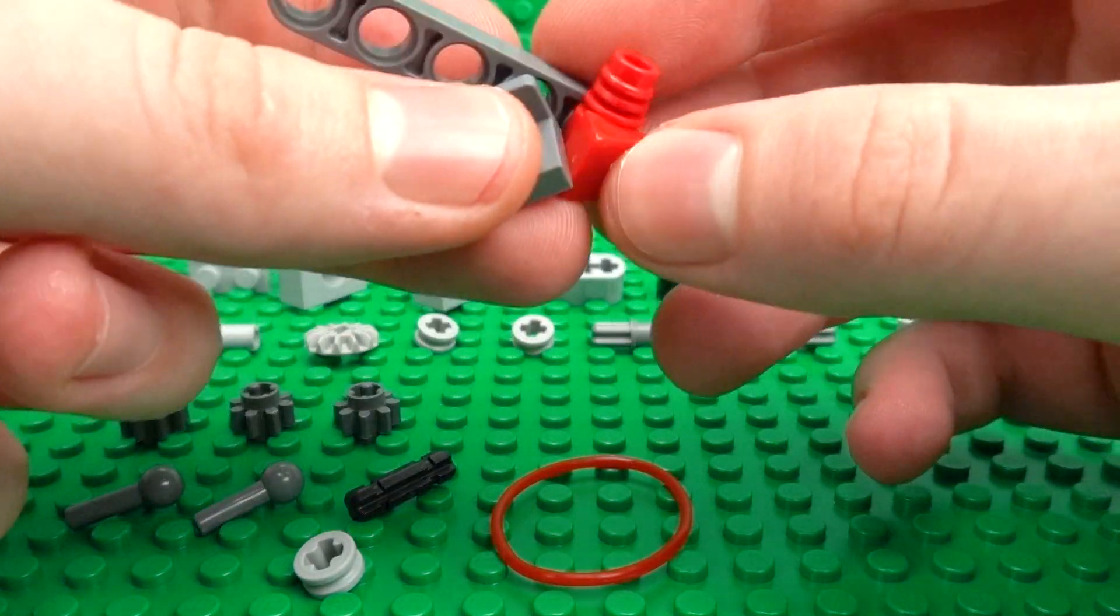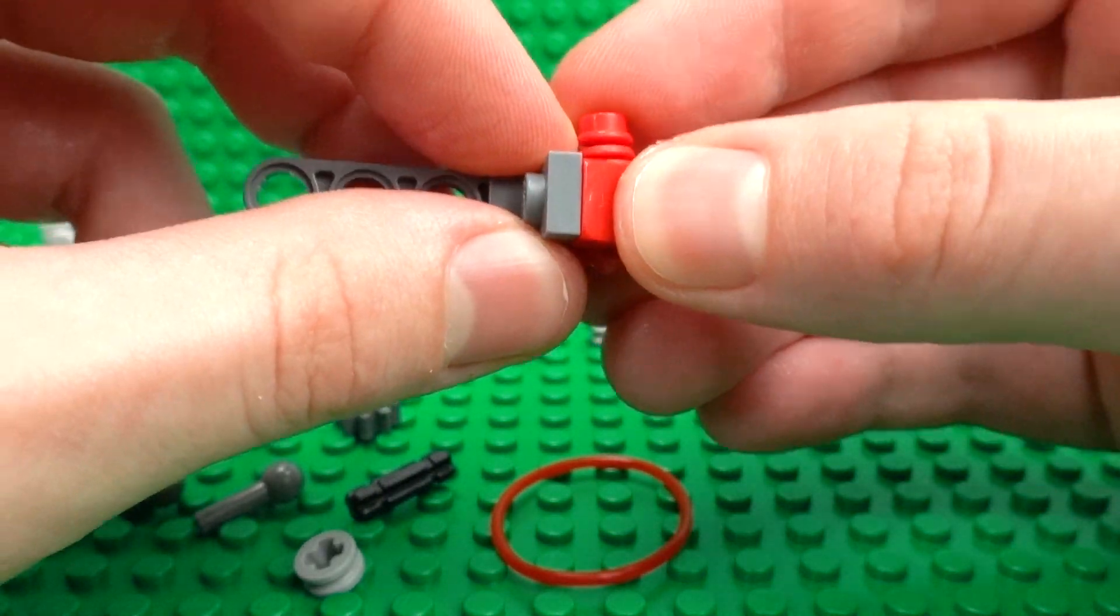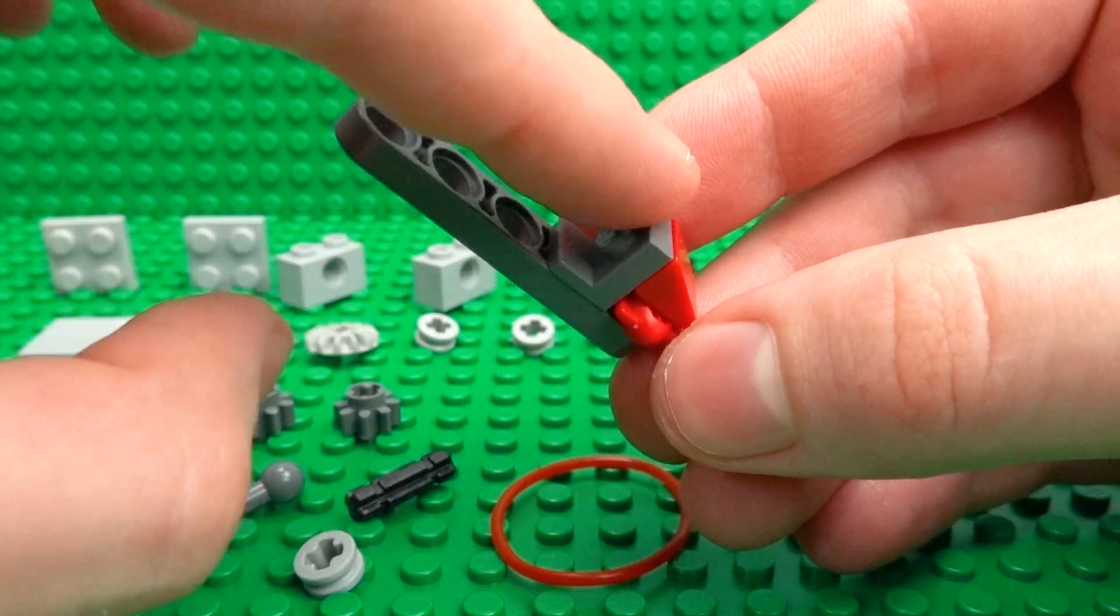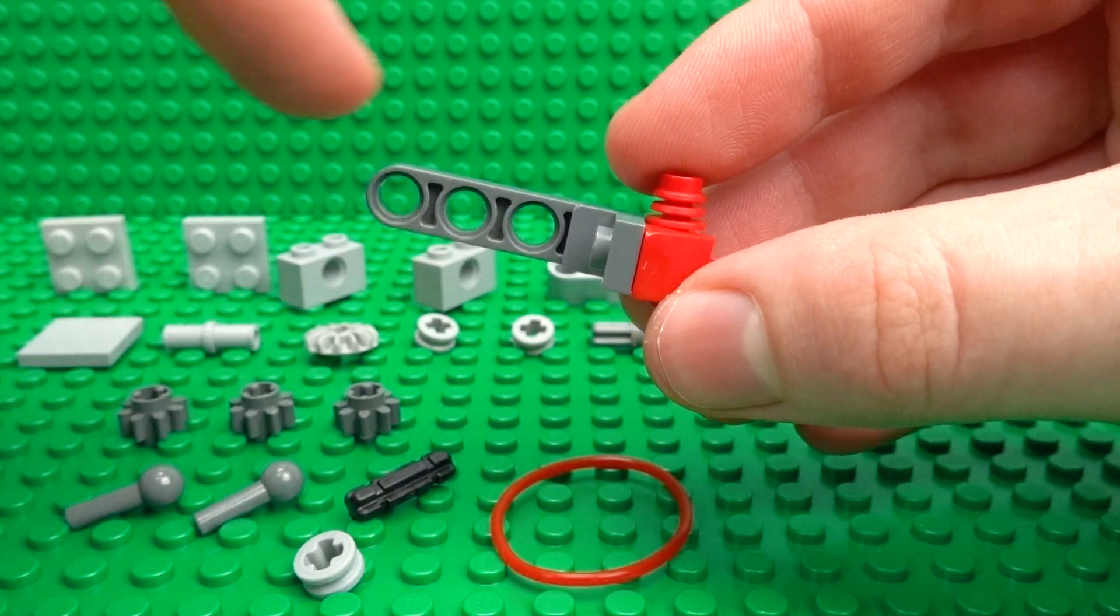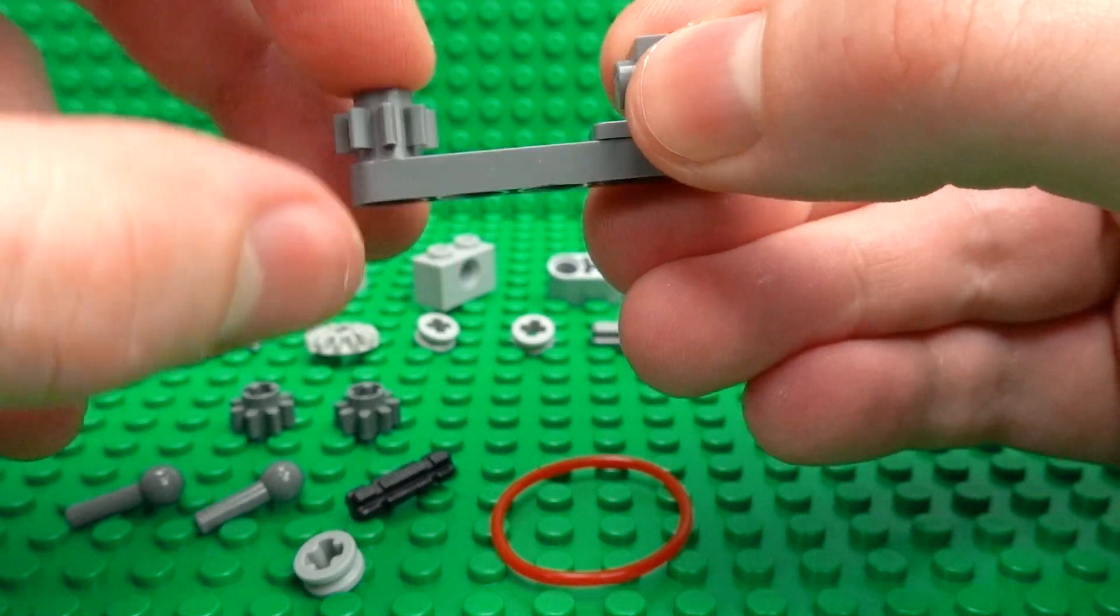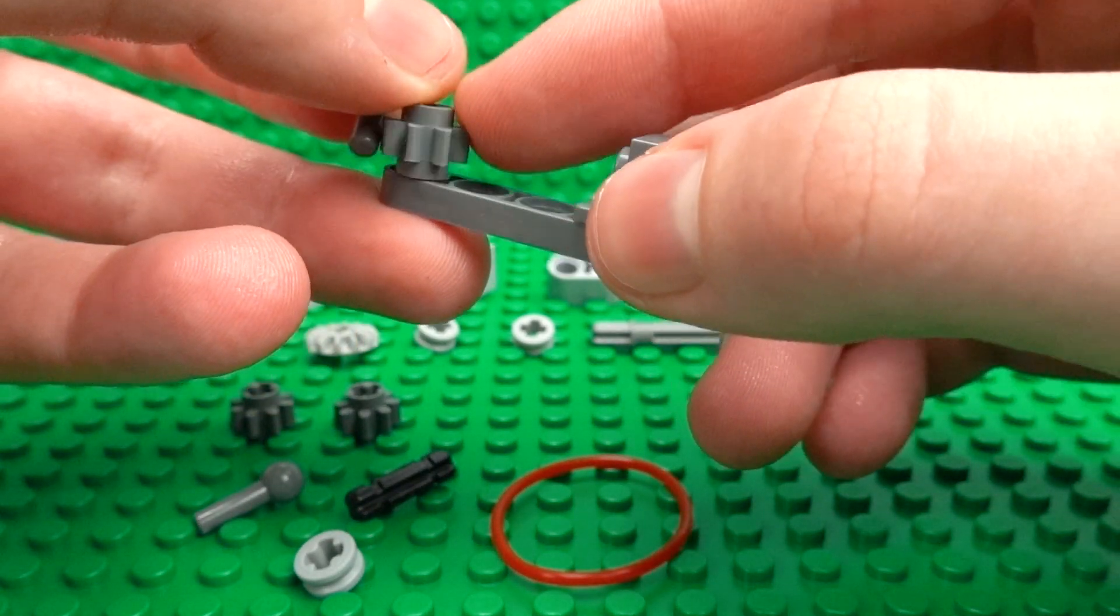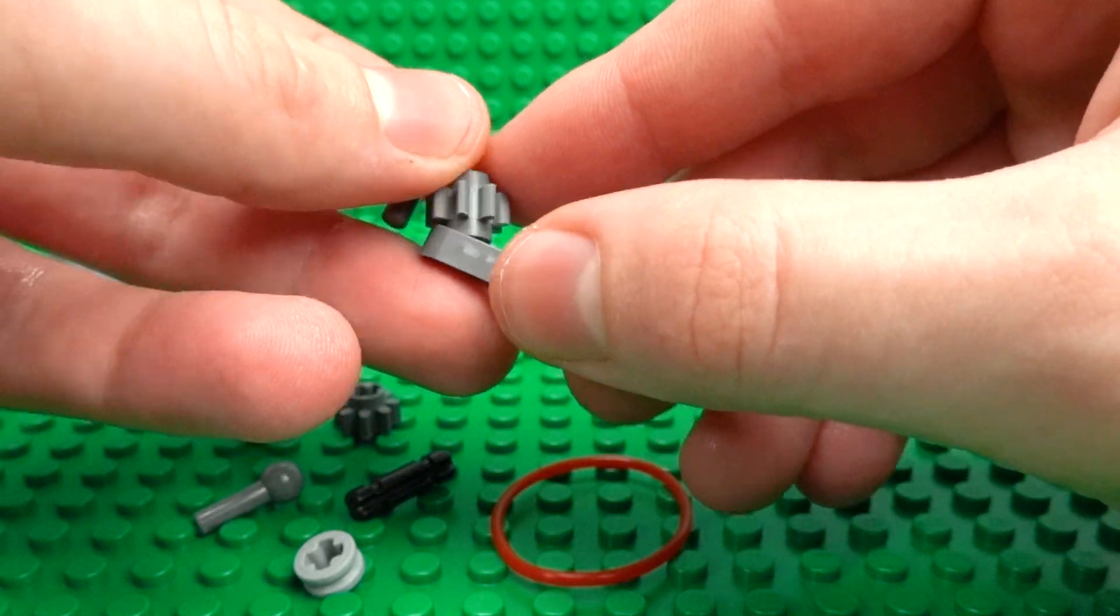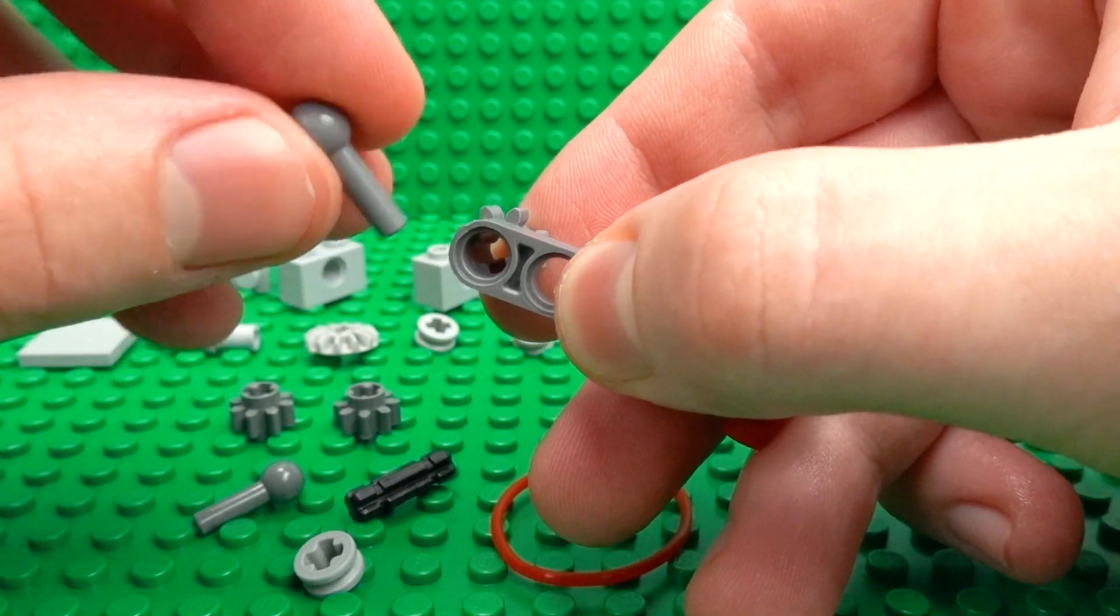Then attach this small 1x1 bracket over there, and now we can begin attaching our gears. So to make them as thin as possible, just basically place the gear through this side of this half lift arm and then attach this 1x1 bar with the ball joint and basically slide that all the way in until both the gear and the ball joint are as far in together as possible.